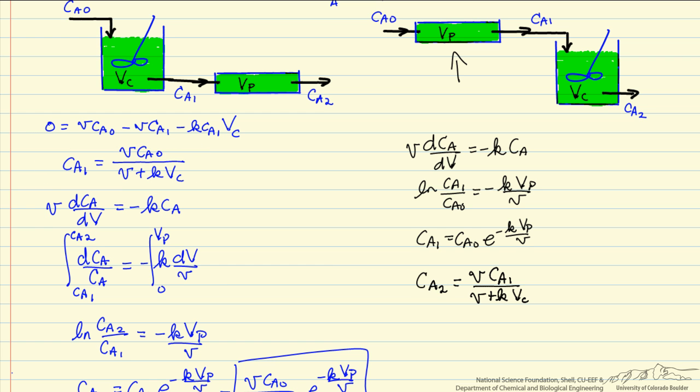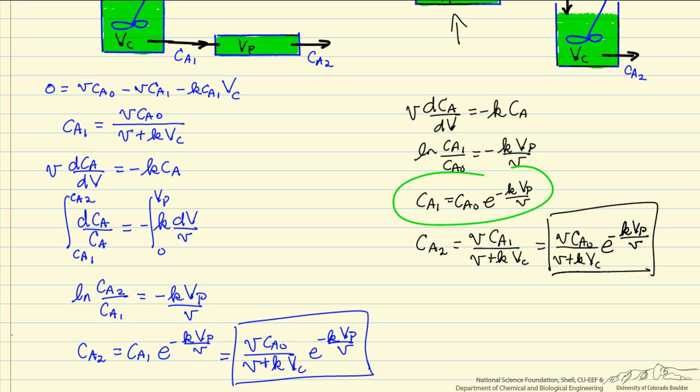And then similarly Ca2 is going to be related to Ca1 by the same equation as here, but now the inlet to the CSTR is Ca1 and the outlet is Ca2. Then I can substitute for Ca1 into this equation, and you can see that we get the exact same equation for the outlet concentration of the reactant when we have the plug flow reactor first as when we have the CSTR first.